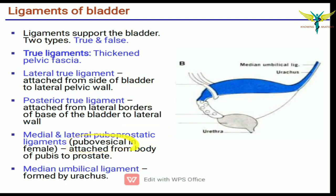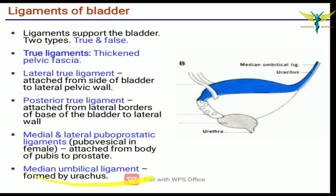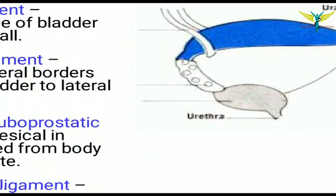The pubovesical ligaments are present in females, with attachment from the pubis to the vesicae — vesicae meaning the urinary bladder. The fourth true ligament is the median umbilical ligament, which is formed by the urachus.